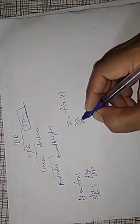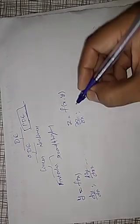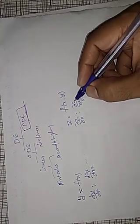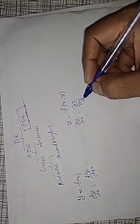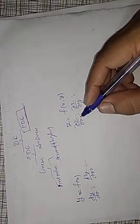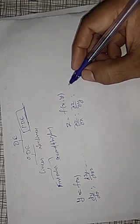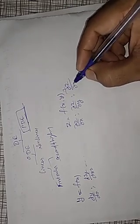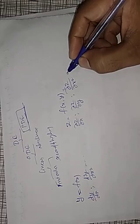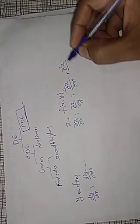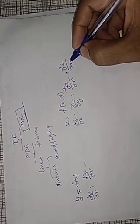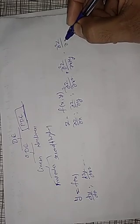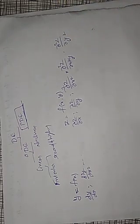These partial derivatives include: ∂z/∂x (partial derivative of z with respect to x), ∂z/∂y (partial derivative of z with respect to y), and higher-order ones like ∂²z/∂x², ∂²z/∂x∂y, and so on.